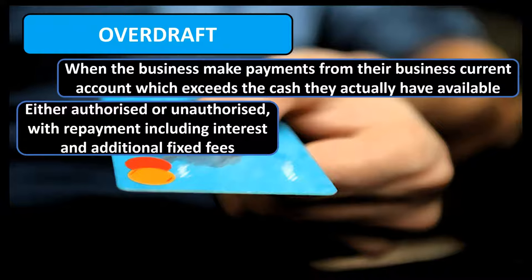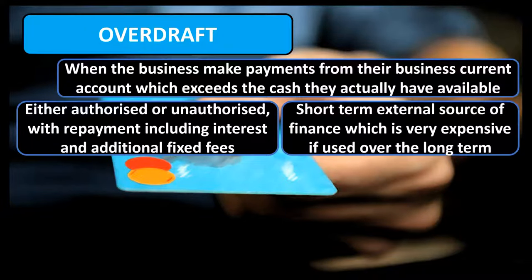In addition to this, overdrafts can be pre-agreed between the bank and the business in the form of an authorized overdraft, which typically has lower interest rates in comparison to an unauthorized overdraft, which will typically see the business charged additional fees on top of the interest. Therefore, if the business can foresee the requirement for additional funding, it is better to arrange an authorized overdraft to keep the additional cost down. It is classed as a short term external method of finance as it should in theory be paid off soon after the business receives it, due to the varying amounts of interest which can be added daily and is ultimately repayable on demand by the bank.